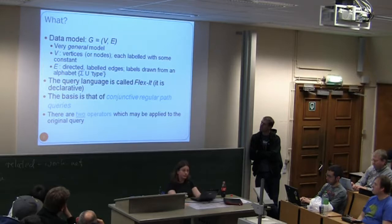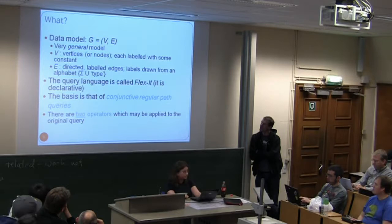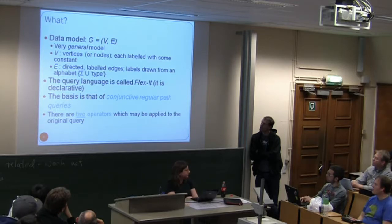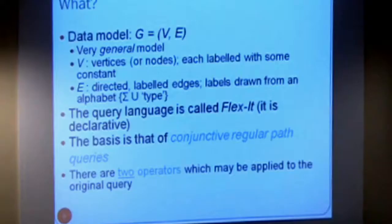The system uses a very general graph data model. V is a set of vertices, all labelled with a constant. E is a set of directed labelled edges, where the labels are drawn from some alphabet, plus a type edge. The query language is called Flexit - not the most exciting name. The basis is conjunctive regular path queries, with two additional operators.